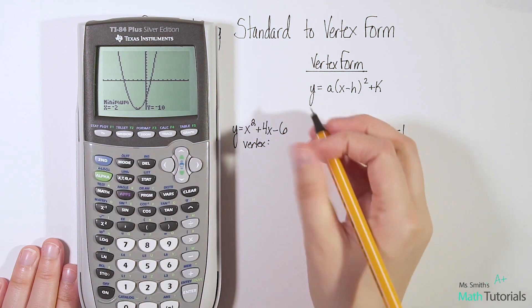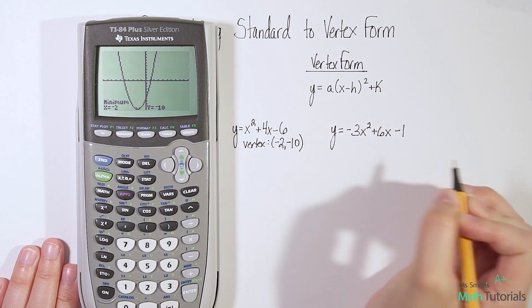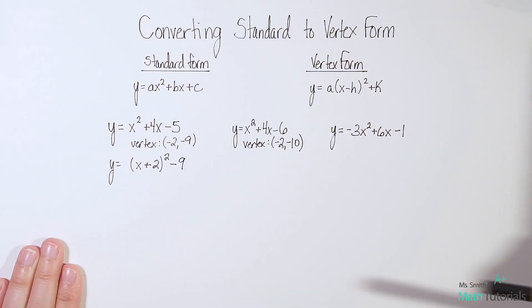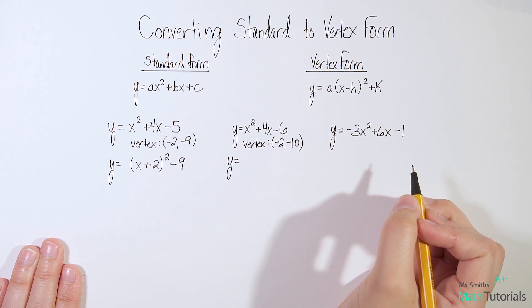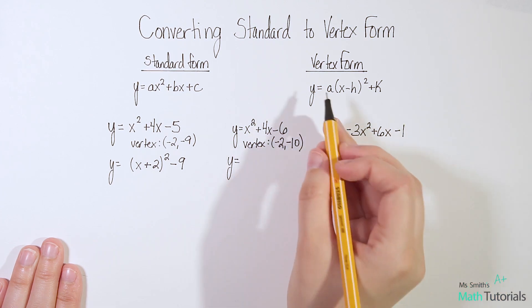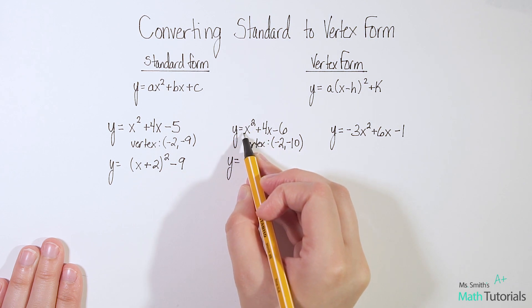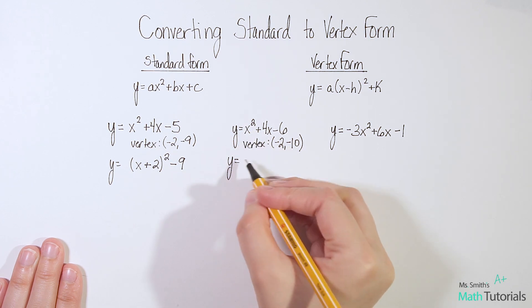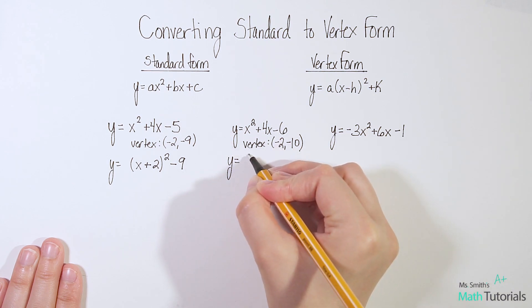I see my vertex here is negative 2, negative 10. So given that information, that's all I need to know. I can now write my vertex form quadratic. Remember, a doesn't change. It's whatever a is in the original. So in this case, again, it's a positive 1. I don't need to write a 1 there, but you can if you want to see it.